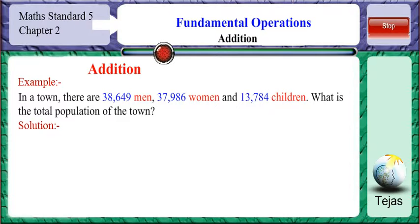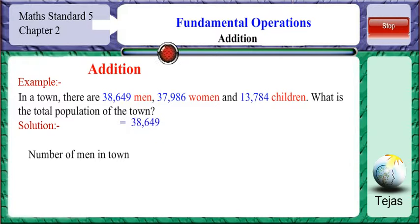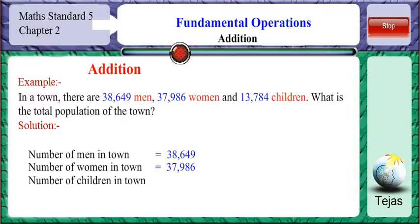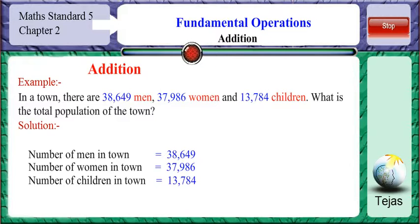Let us write down what is given in the problem. Number of men in town is equal to 38,649. Number of women in town is 37,986. Number of children in town is 13,784. We need to find the total population of the town.